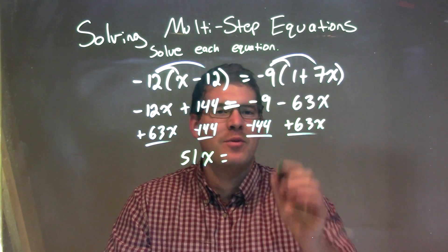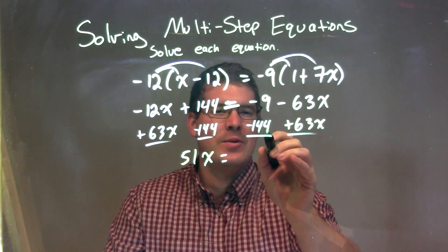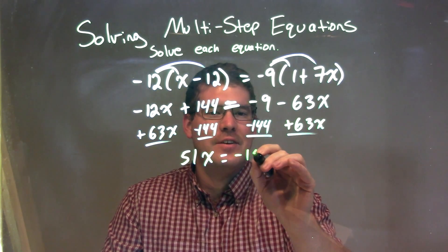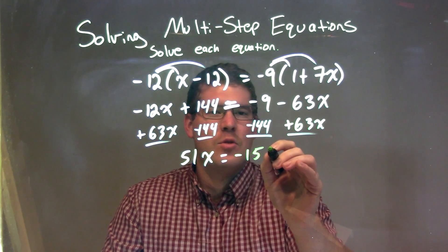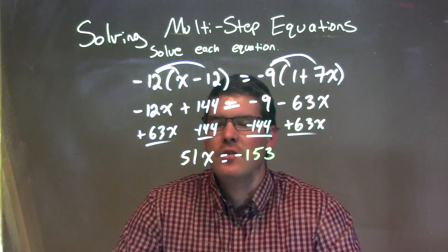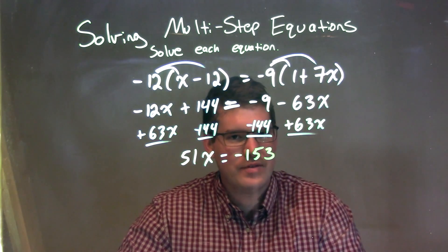Minus 144 is a negative 153. We have negative 153 here. So now I have 51x equals negative 153.